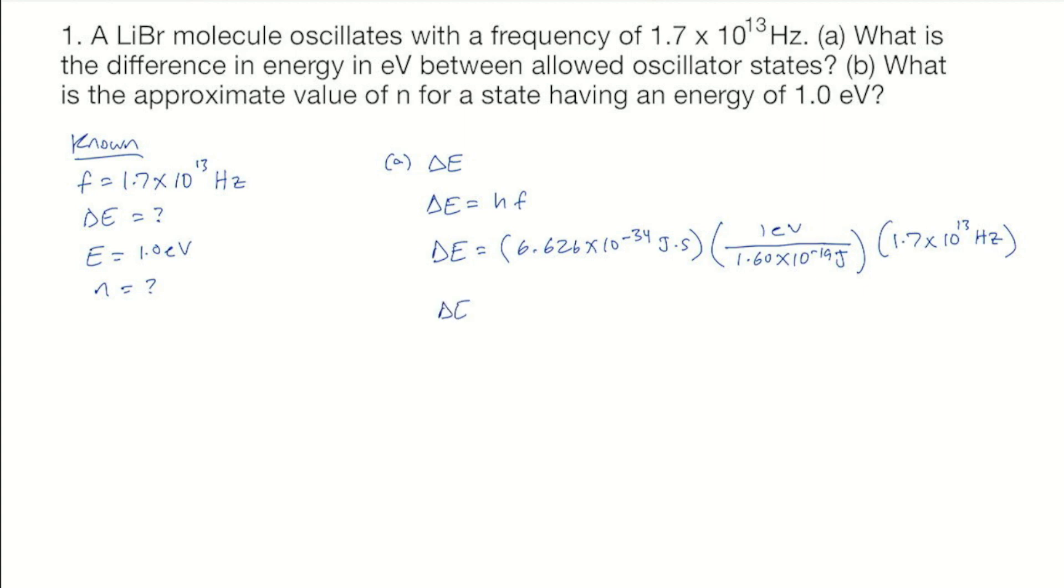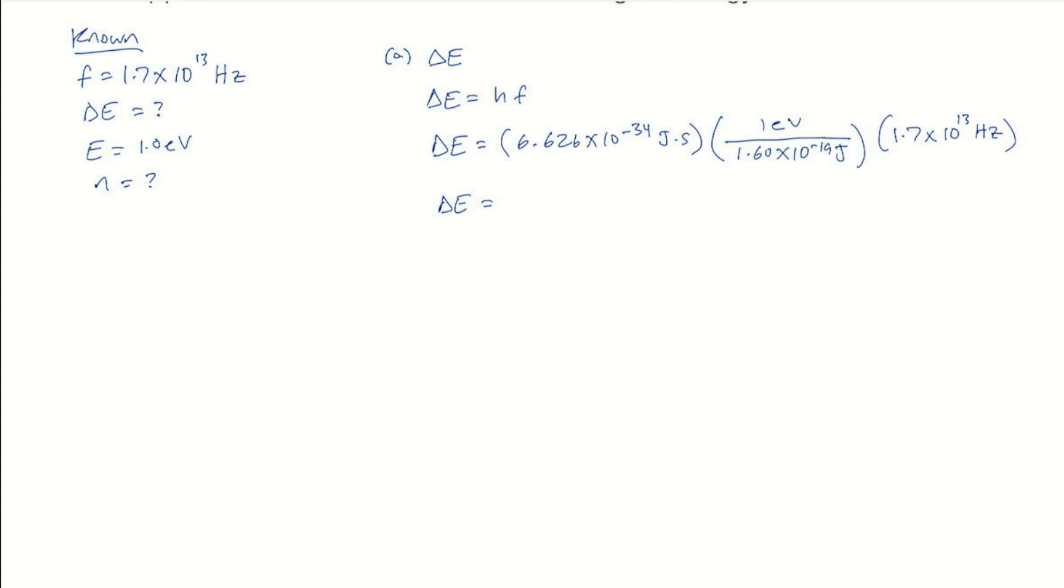I did the calculation, and I found delta E is 7.04 times 10 to the minus 2 eV. And so to 2 sig figs, delta E is 7.0 times 10 to the minus 2 electron volts.